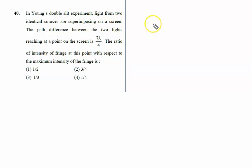In Young's double slit experiment, light from two identical sources are superimposed on a screen. There are two sources S1 and S2, and this is a screen.